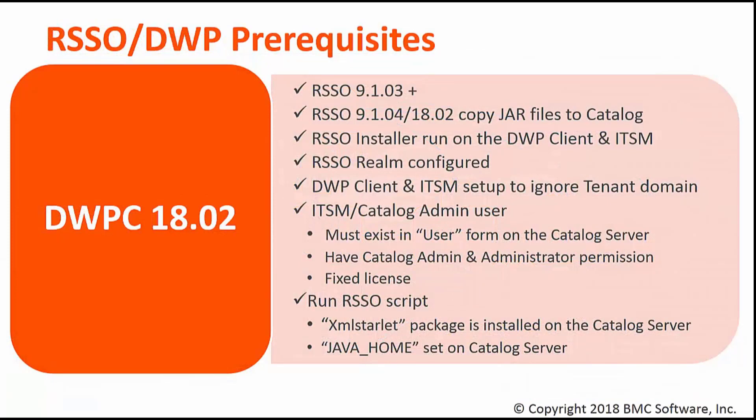Digital Workplace Catalogue 18.02 supports RSSO 9103 and above. However, for RSSO versions later than 9103, we need to copy the respective jar files from the RSSO install package.